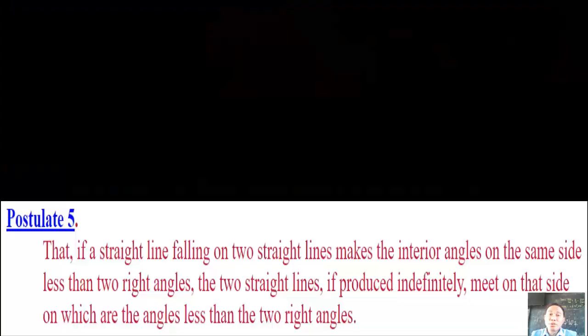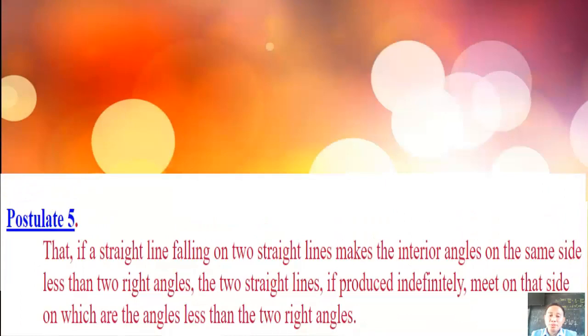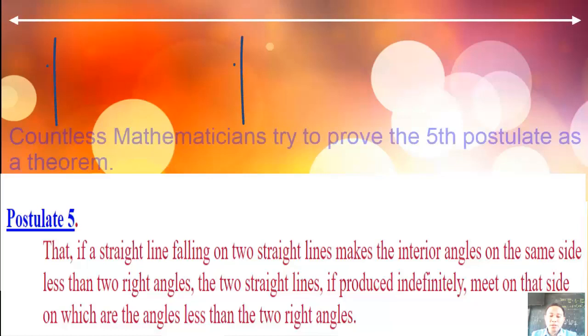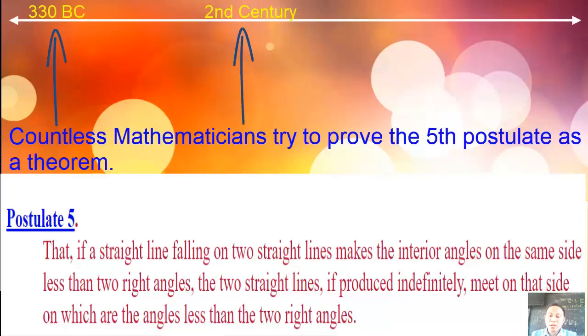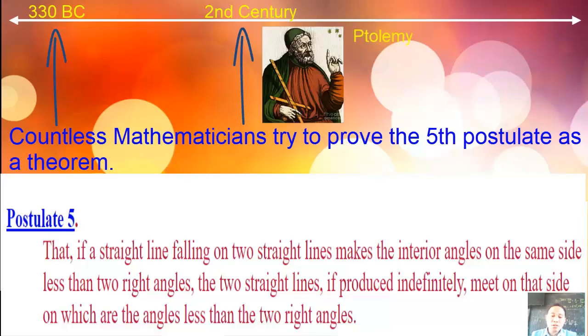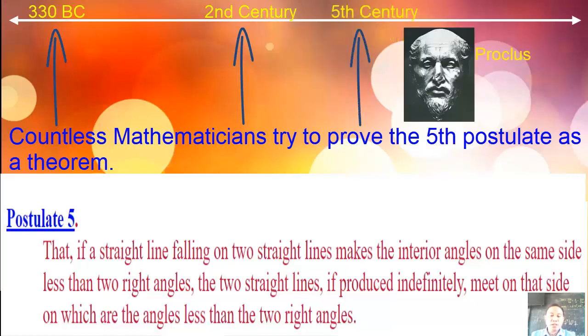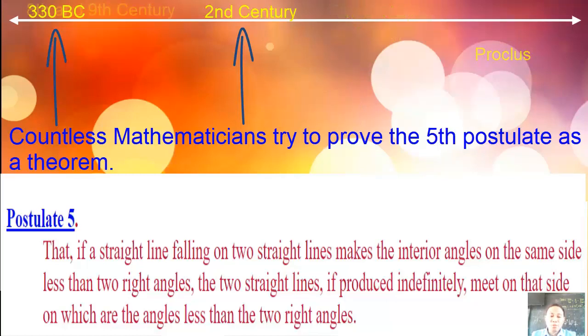The fifth postulate seems more like a theorem than a postulate. For more than 2,000 years, most mathematicians were convinced that Euclid was not clever enough. They were proposing proofs of it. Countless mathematicians attempted to prove that the fifth postulate is a theorem, one of which is Ptolemy in the 2nd century. Then in the 5th century, Proclus pointed out flaws in the proof of Ptolemy and also presented his proof, which was found also flawed.